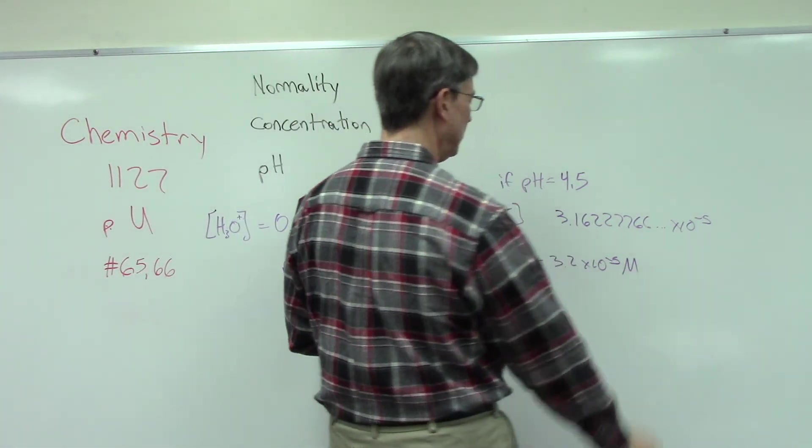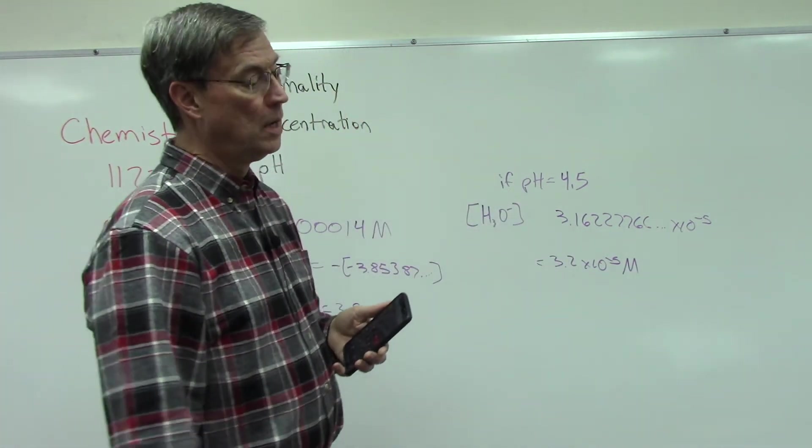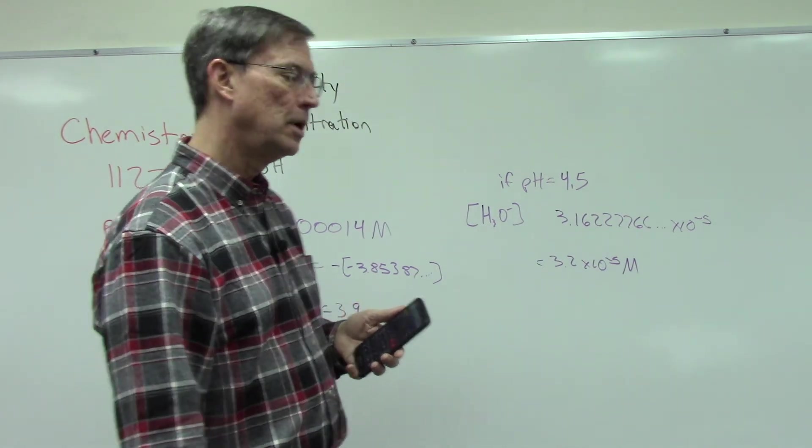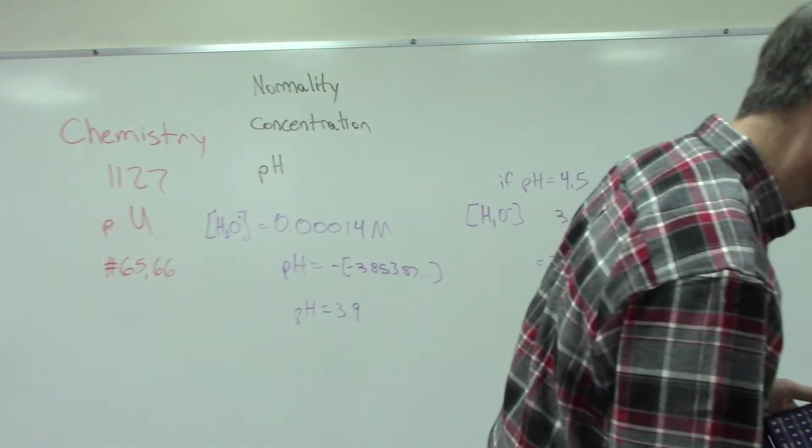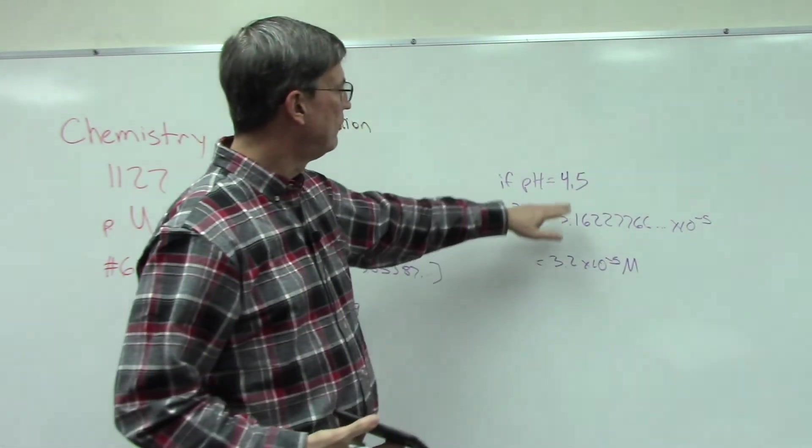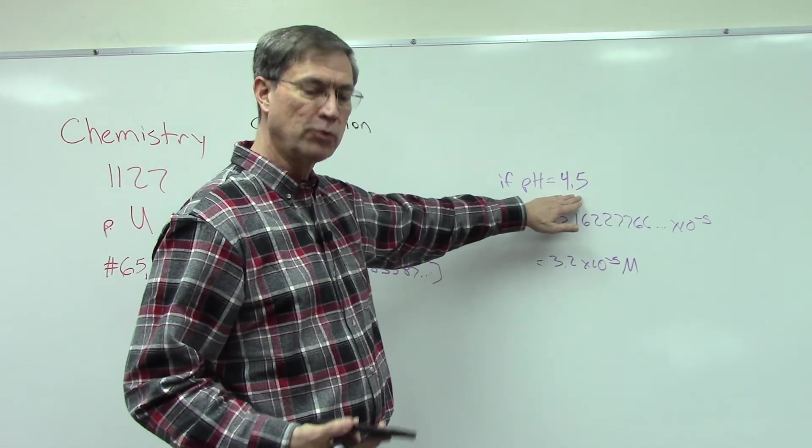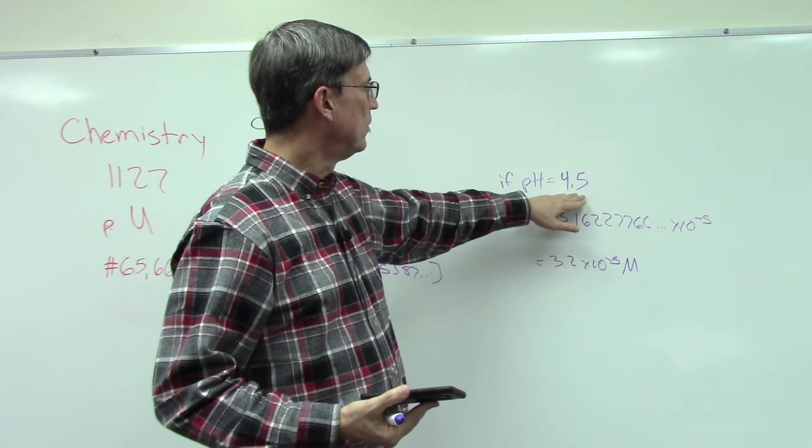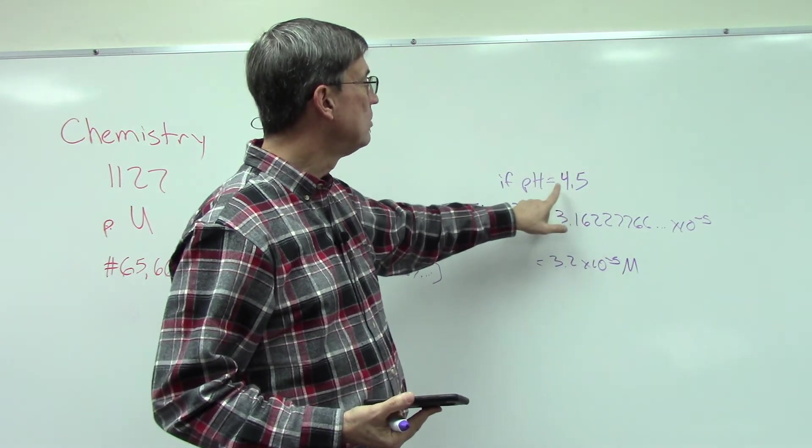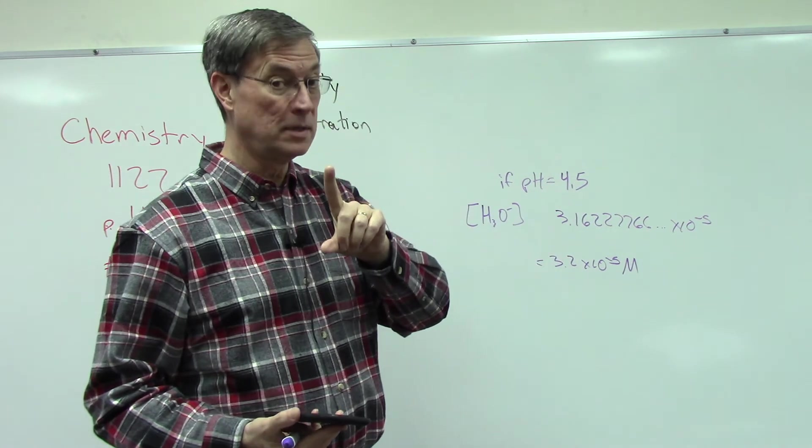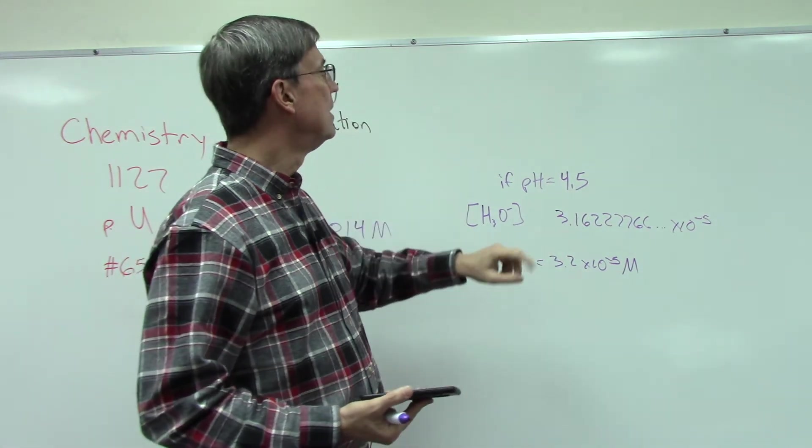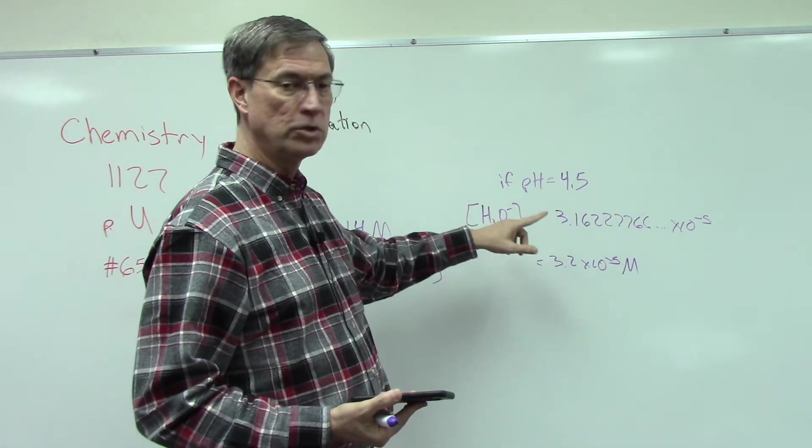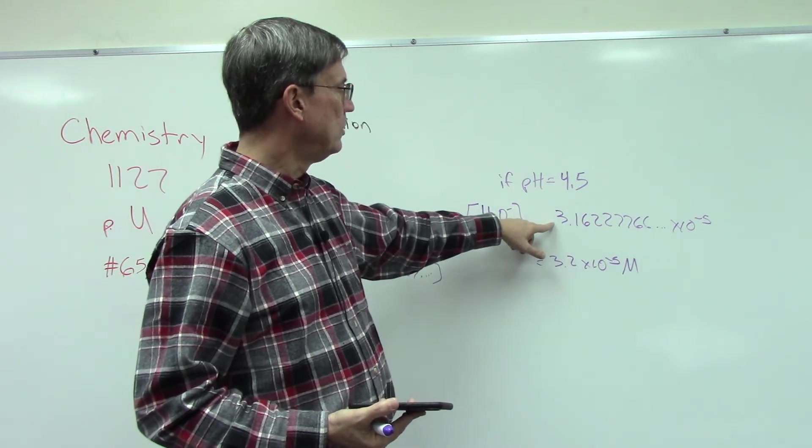Like I said, in your homework here, problem 66, you're going to do 4.3 instead of 4.5, but you're going to go through those same steps: first put that on the calculator, change it to negative, then do the second function log.